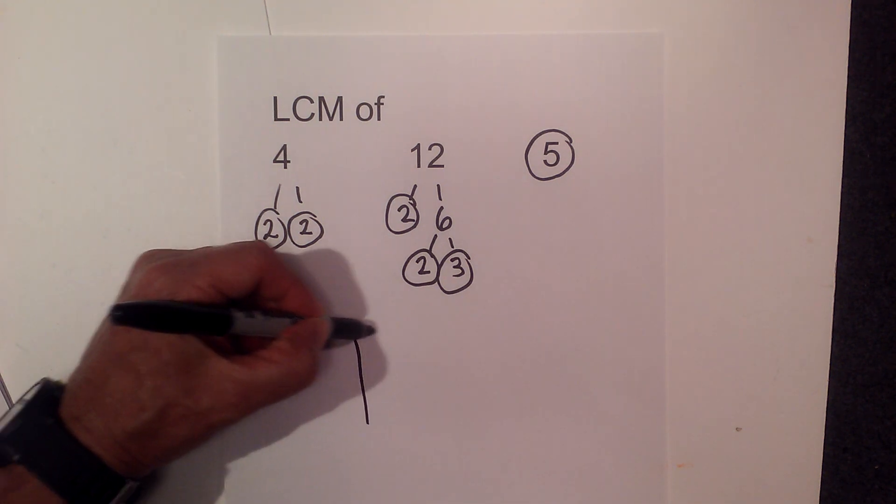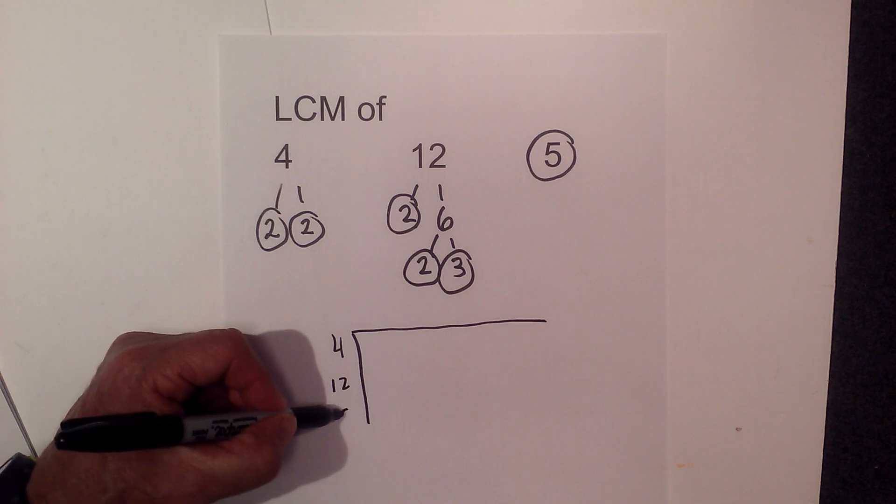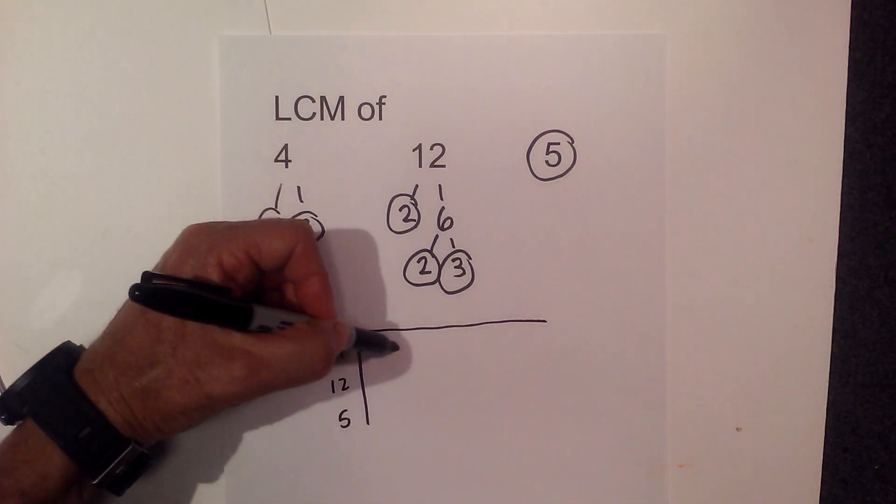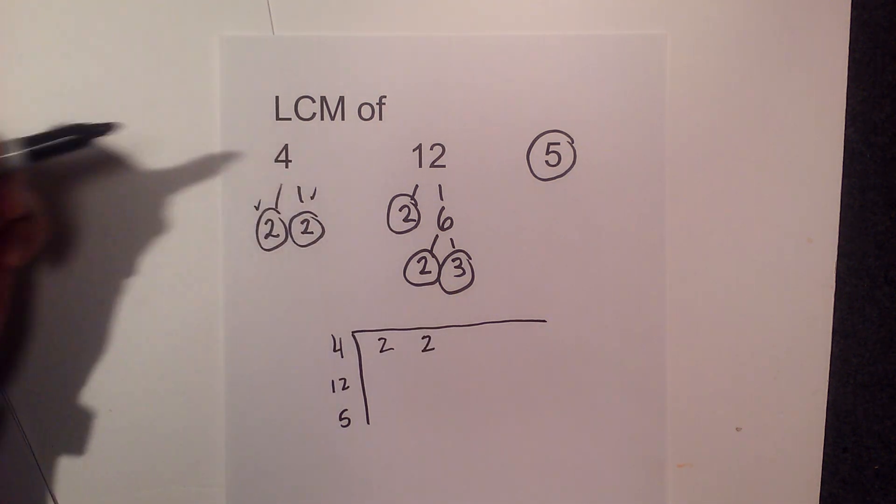Now I complete a prime factorization chart for all three numbers. This just helps cut down mistakes. I'm gonna write 2 and 2. Put a check by them so I don't make errors.